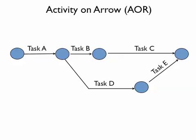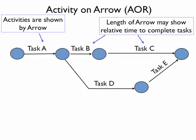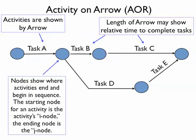Activity on arrow — the activities are actually represented by arrows. The length of the arrows may sometimes be used to indicate the relative amount of time needed to complete a given task. Nodes are where tasks intersect, providing information about precedence. A starting node is referred to as an I node and the ending node is a J node. For example, task A's J node is task B and D's I node.